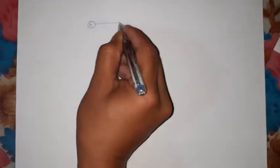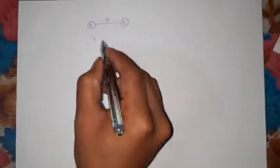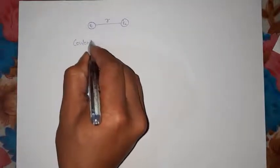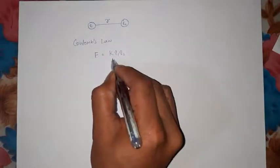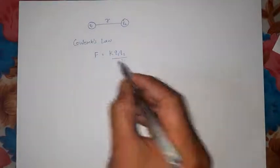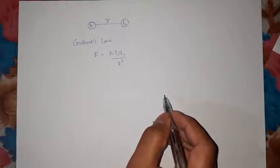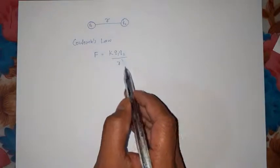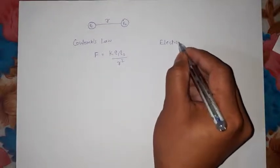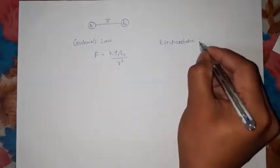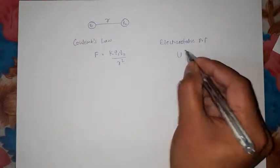First, let us suppose we have a charge Q1 and charge Q2 separated by a distance r. The force between them is called Coulomb's law. What is the force? It's the product of the charges Q1Q2 divided by the square of the distance r². So this is the basic formula: F = kQ1Q2/r².